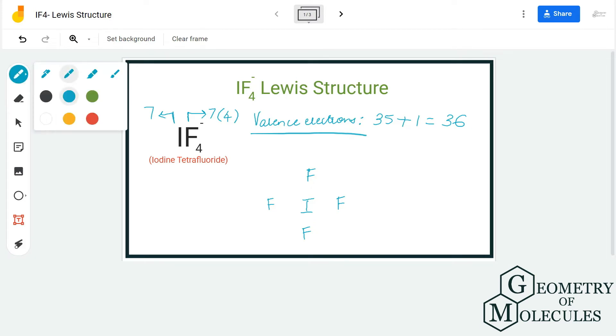Now iodine atom will take the central position here and all the fluorine atoms will be arranged around it like this. Place a bond between each fluorine and iodine atom. After placing four such bonds, there will be eight valence electrons used out of 36 valence electrons.